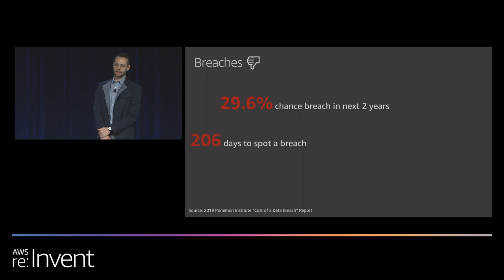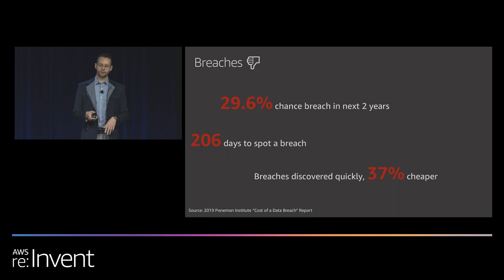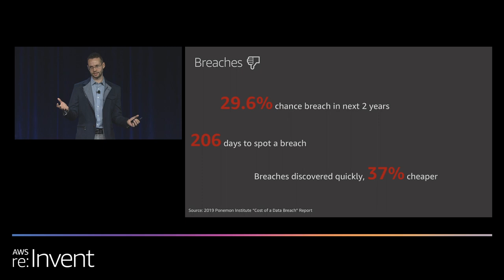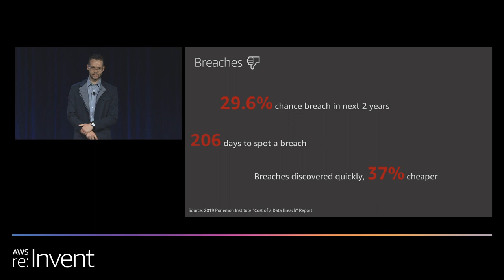On average, it takes 206 days to spot a breach. Most of us would agree that if you can spot it quicker, everything's going to be better — the cost is going to be much lower, you have less time to respond, you can contain the damage. The report further elaborated that if you can discover a breach quickly, it's 37% cheaper. They divided all the breaches into two groups — less than 200 days and more than 200 days — and found that the less than 200 days group was 37% cheaper. So if we get really good at detecting things like breaches early, we can make a material impact. Best case scenario, we can completely prevent it and have zero dollar cost.